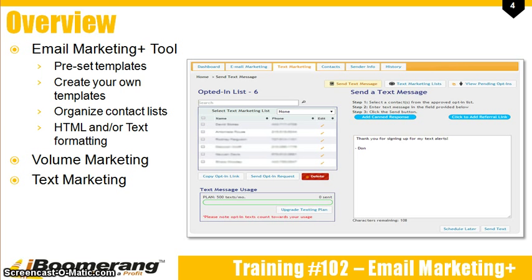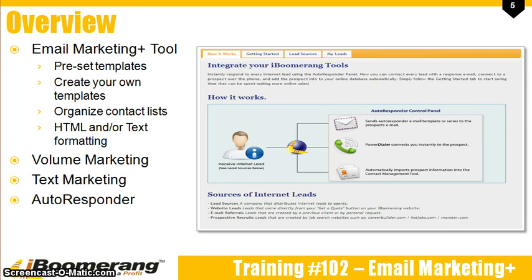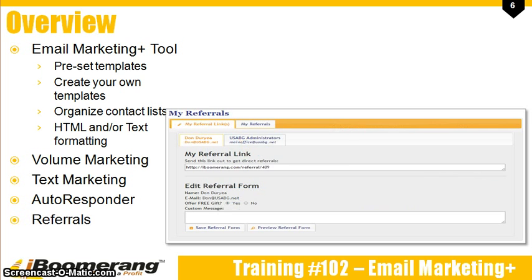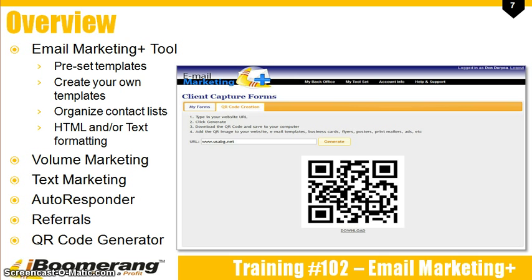Customers can easily opt in or opt out of your text messaging stream to keep subscriber satisfaction high. You can also choose to send your text messages right away or schedule them for the future. Both our email and text messaging system come with the autoresponder, which allows you to create canned responses that will send automatically when a customer does a certain action, like signs up for text alerts. We also provide you with a unique referral link that you can use across your marketing efforts, and we also have a free built-in QR code generator that you can add to your printed marketing materials.